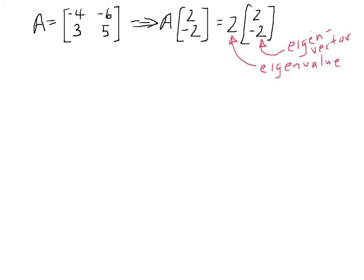And what we found is that when we took A times the vector 2, negative 2, that was simply the same as multiplying the vector by the number 2.